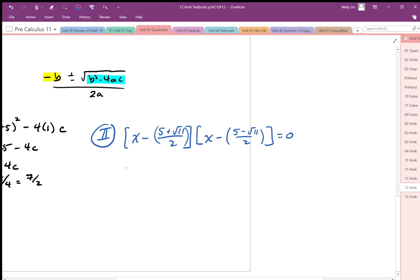Expanding this out, I'm going to end up with x squared minus, so I'm going to take these two numbers to represent the coefficients on the middle term x. So 5 plus root 11 over 2 plus 5 minus root 11 over 2. And that's going to give us the middle coefficient on x.